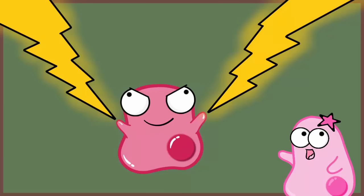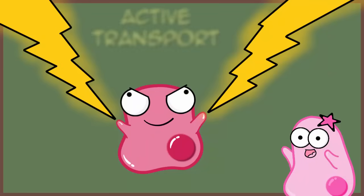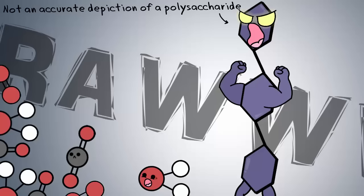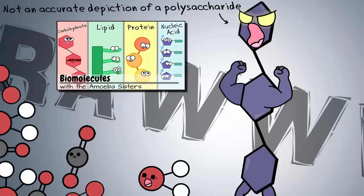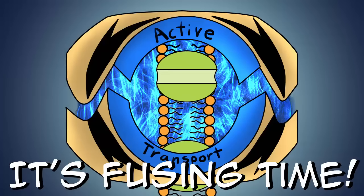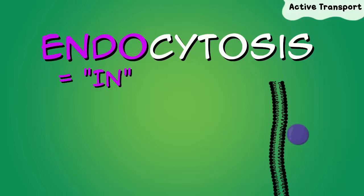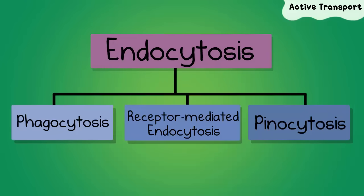There are other times a cell needs to exert energy for transport. Let's say a cell needs a very large molecule—like a big polysaccharide, which is a large carbohydrate. The cell may need to fuse with the molecules it's taking in order to bring them inside. This is called endocytosis—think 'endo' for in. Often this fusing of substances with the cell membrane will form vesicles that can be taken inside the cell. Endocytosis is kind of a general term; there are different types depending on how the cell is bringing substances inside.